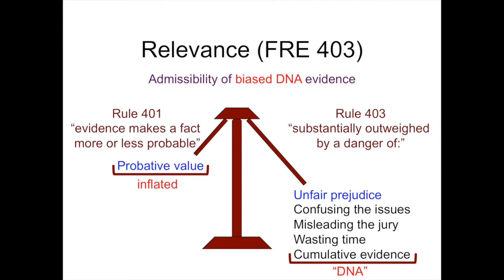How can lawyers keep biased DNA evidence out of the courtroom? One approach is to make it inadmissible by filing a motion to suppress based on relevance or Federal Rules of Evidence Rule 403. Evidence makes a fact more or less probable, but the probative value of DNA is often greatly inflated. Rule 403 says evidence can be excluded if its probative value is substantially outweighed by a danger of unfair prejudice, confusing the issues, or misleading the jury — and that is exactly what we have with biased DNA mixture statistics.